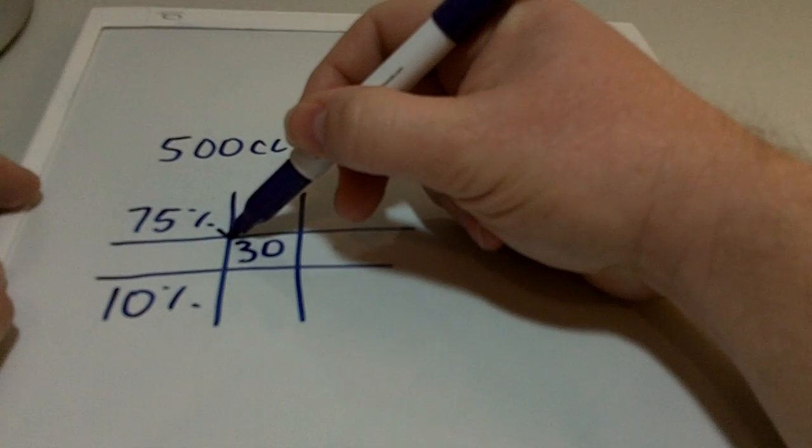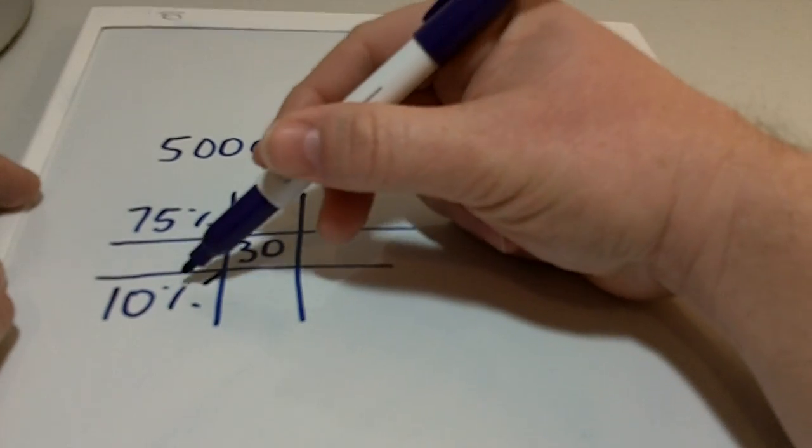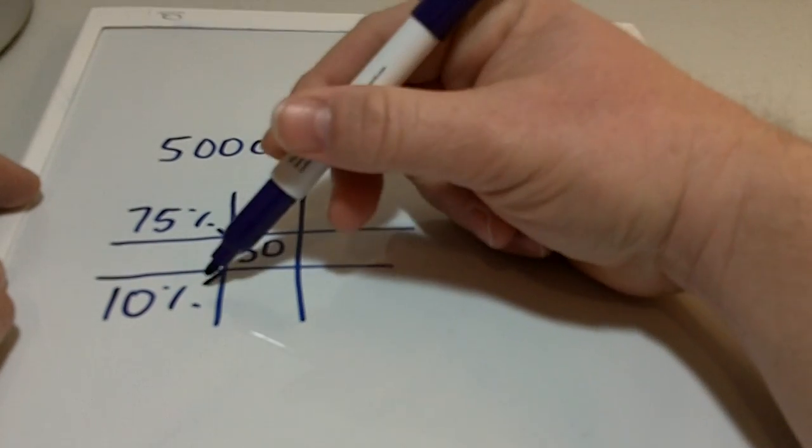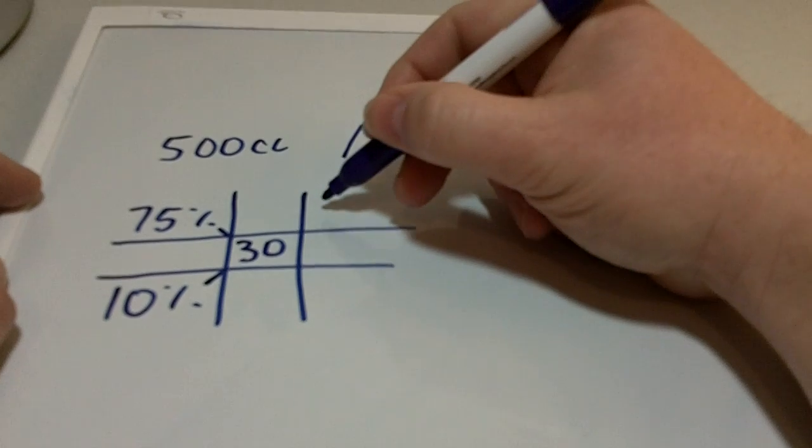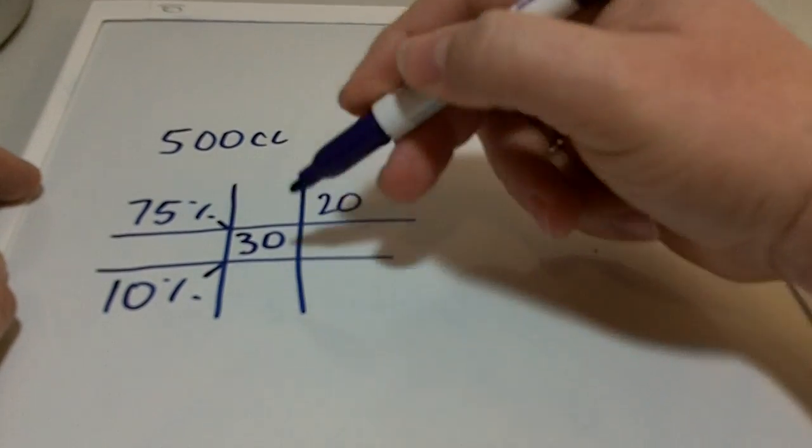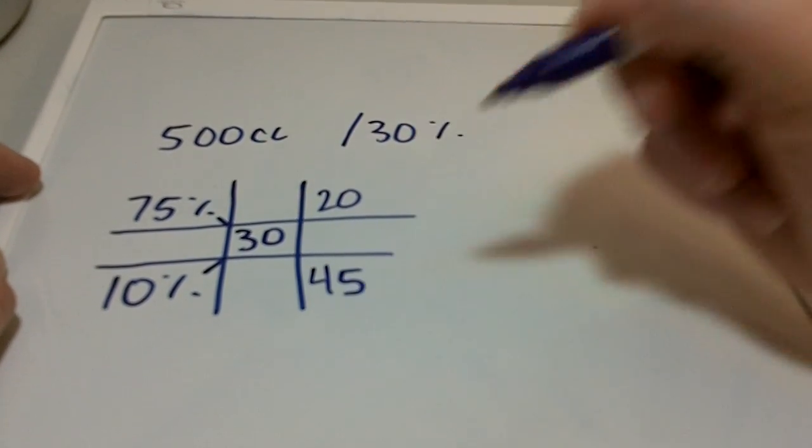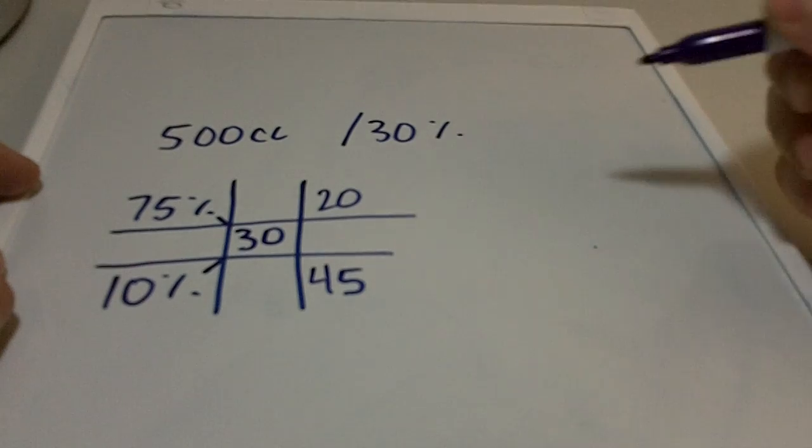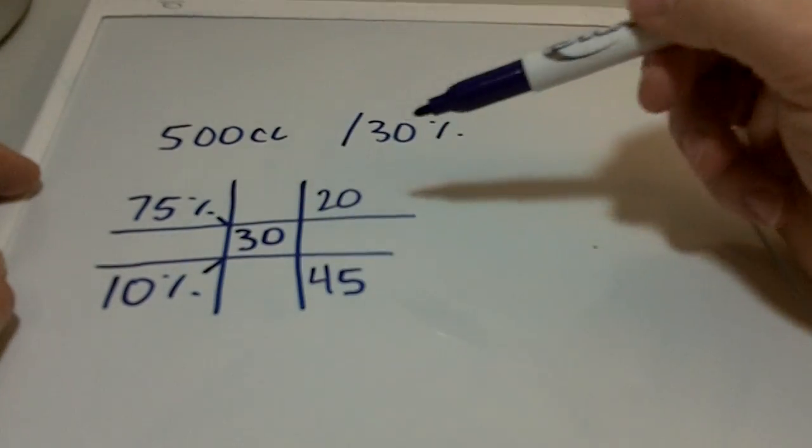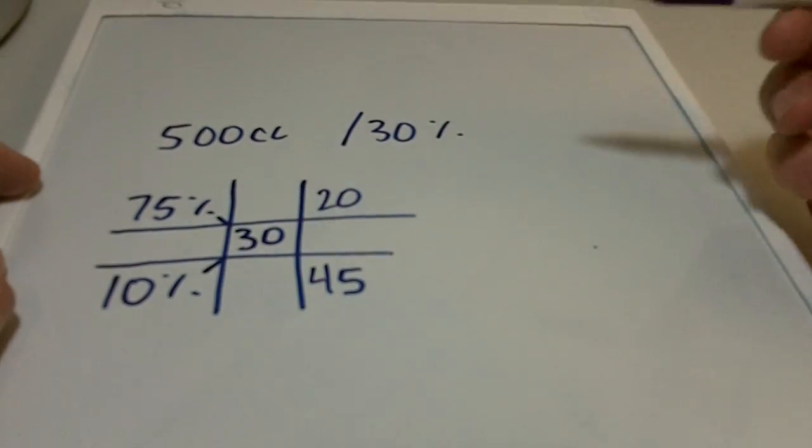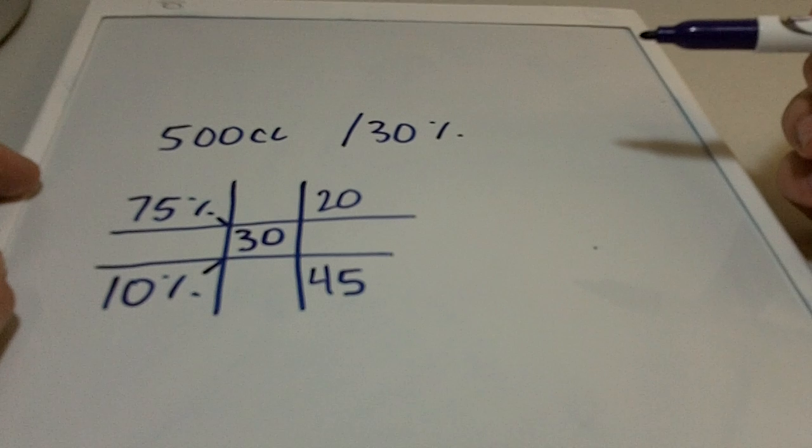Looking at these two, we'll go ahead and figure the difference between what we have and what we need going diagonally. So this way we have 20, and this way we have 45. And those represent parts of these solutions. If we mix that all together, we'd come up with the desired solution there in the middle.